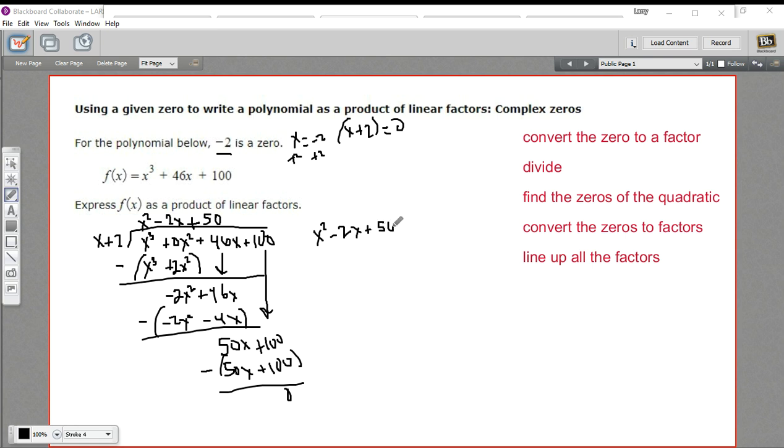And unfortunately, this is not going to factor. So we can't just get our factors by doing some easy factoring here. So I think we're going to have to use the quadratic formula. So the quadratic formula is negative b. Well, that's a negative, negative two. So that's a positive two.